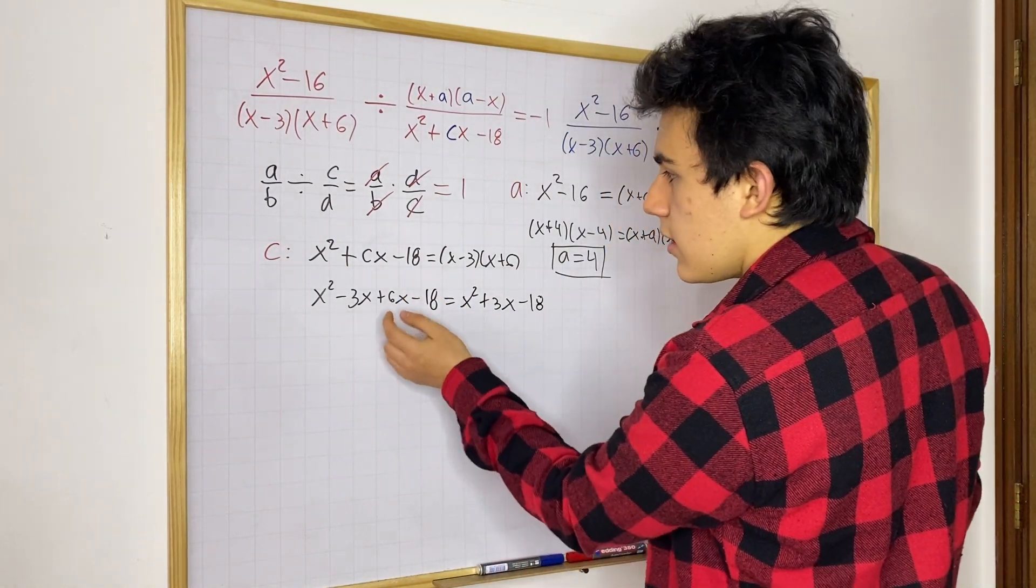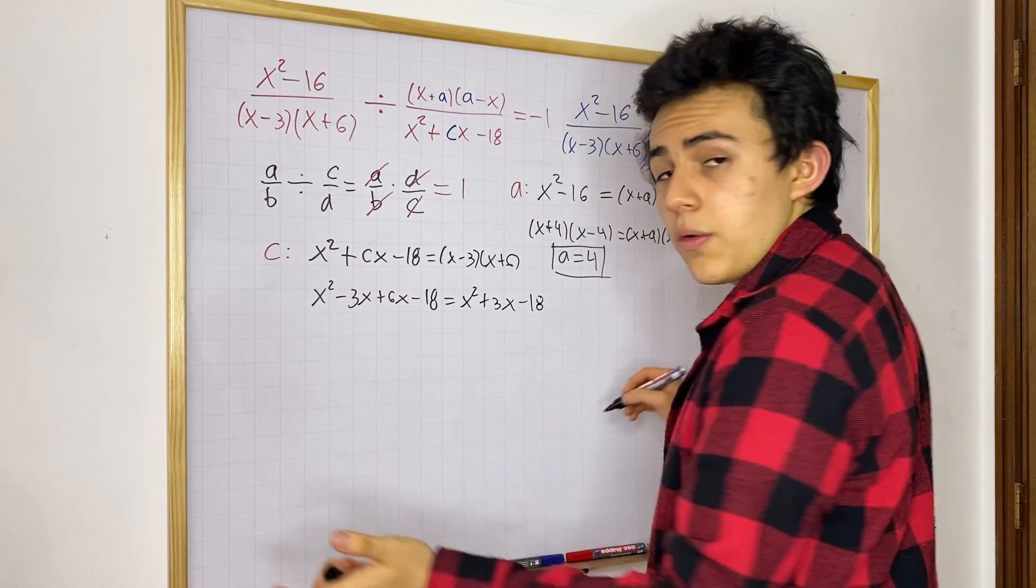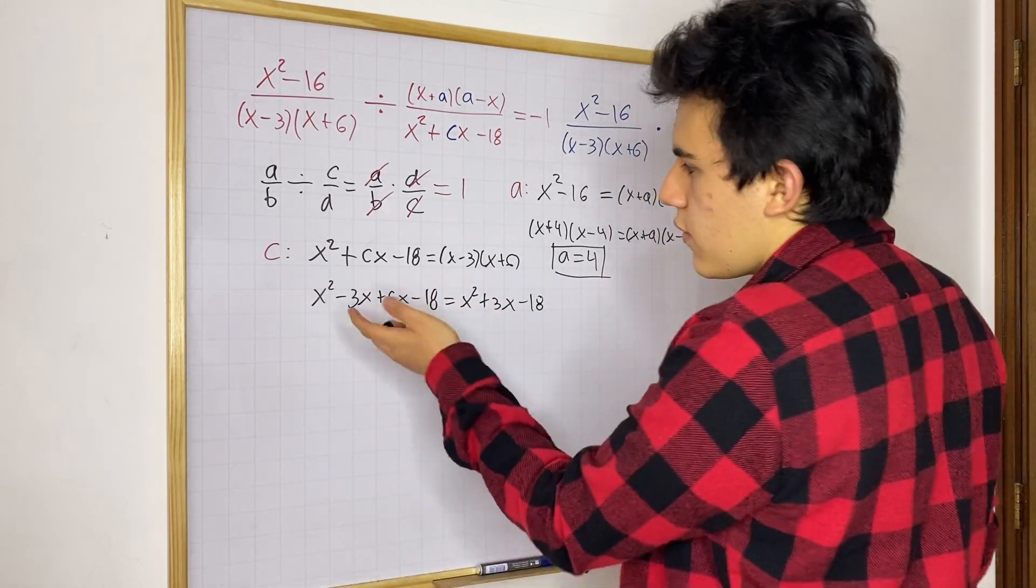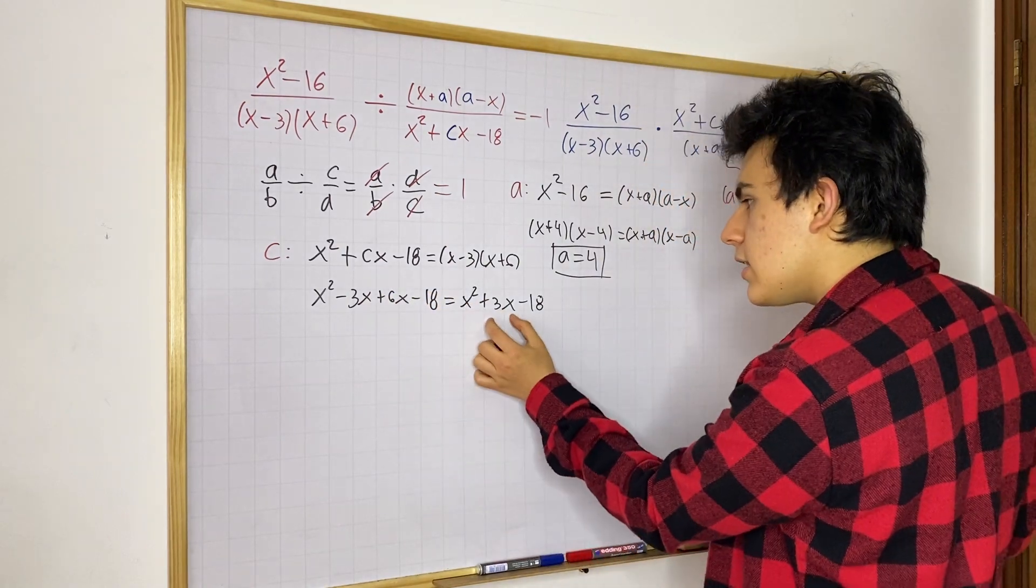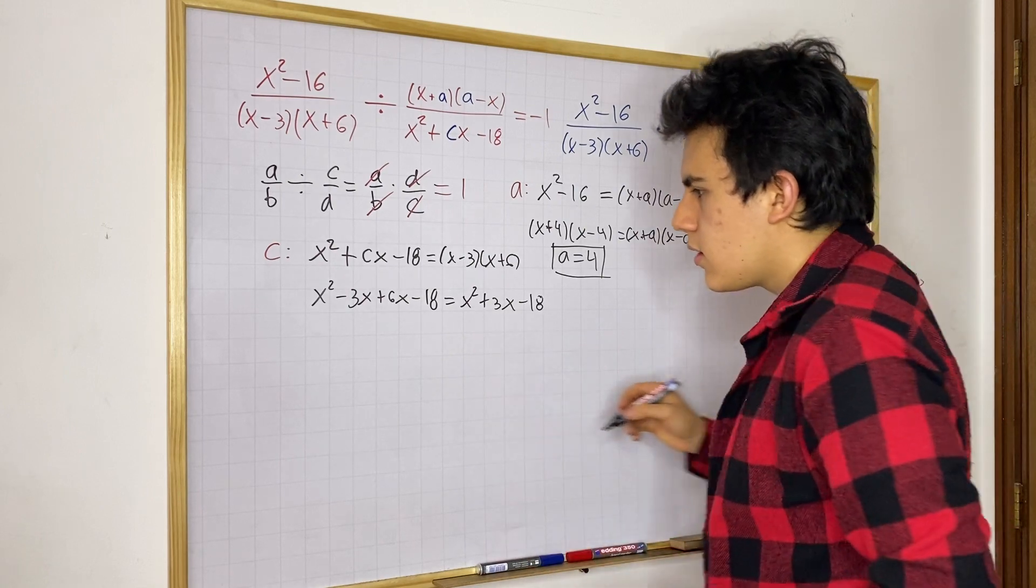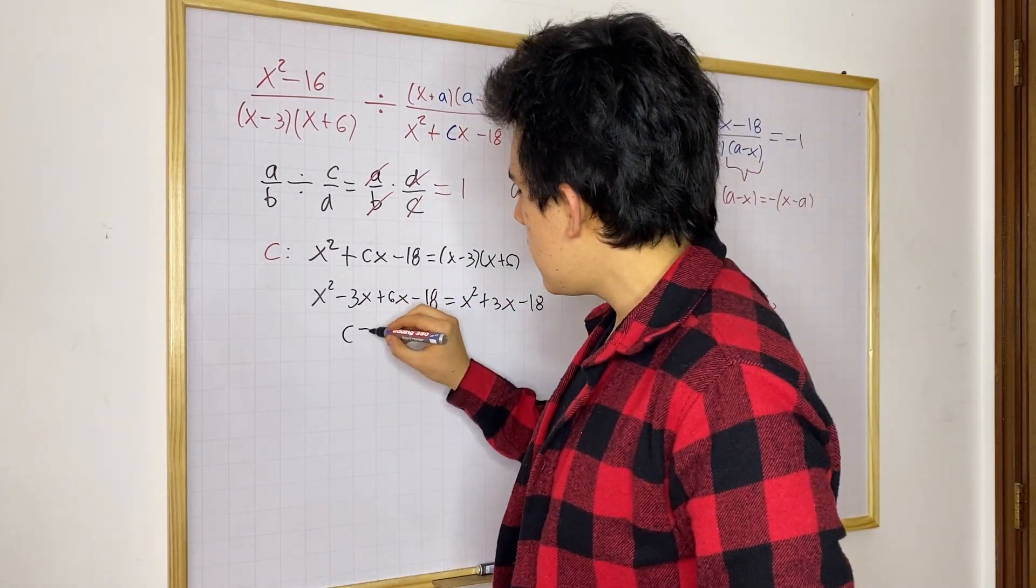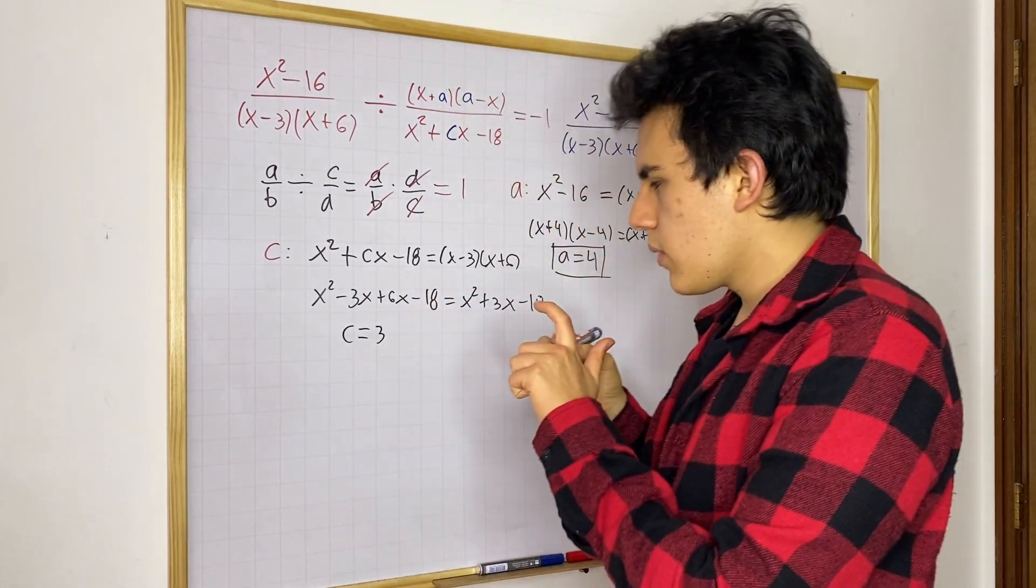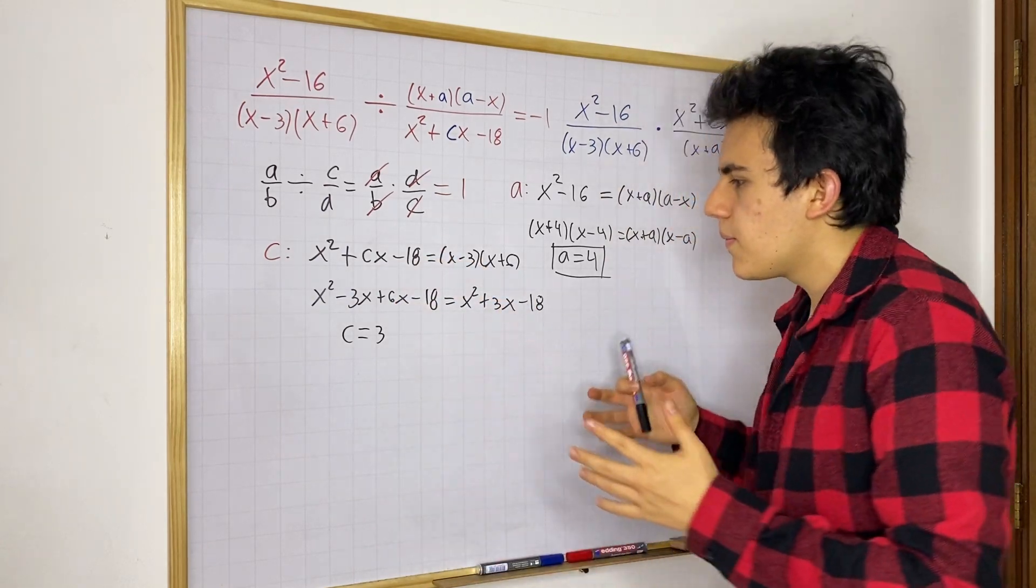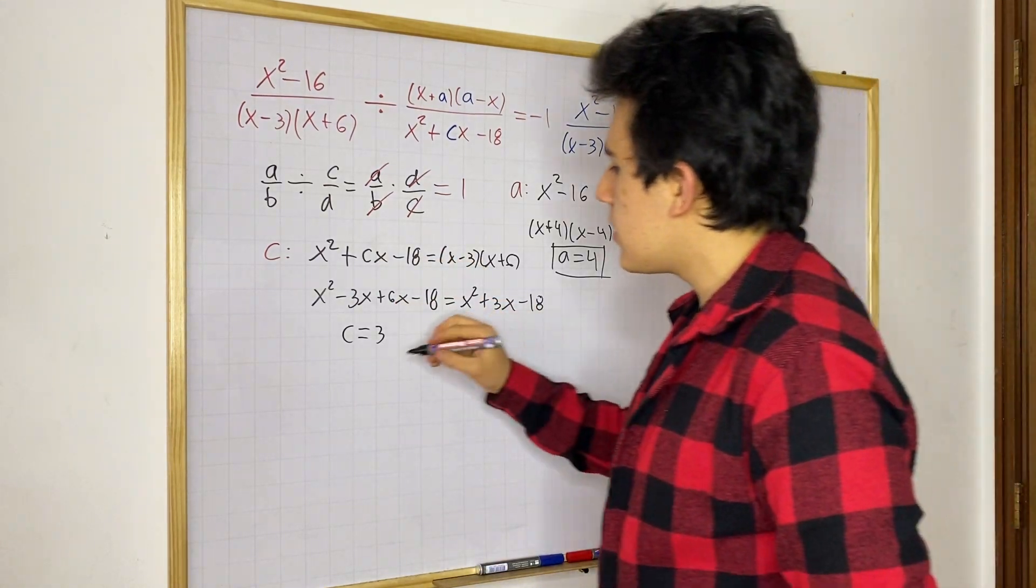And we know, one thing you can say is that this C is the coefficient for the first degree term that we have, for the first degree term relative to X. So, that means that this coefficient must be the same as this coefficient in this term. So, we know that C is equal to 3. Because C matches this 3X. That's how you know. So, C is equal to 3 and A is equal to 4.